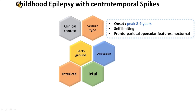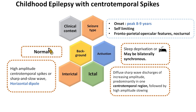Childhood epilepsy with central temporal spikes, also previously known as Rolandic epilepsy, is a self-limiting epilepsy seen in children in their early school years. The seizures are brief. Frontal, parietal, or opercular features may evolve to focal to bilateral tonic-clonic seizures occurring nocturnally. The EEG shows a normal background with high-amplitude central temporal sharp waves or spikes, which are activated with drowsiness and sleep.